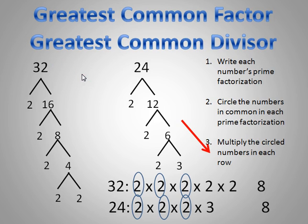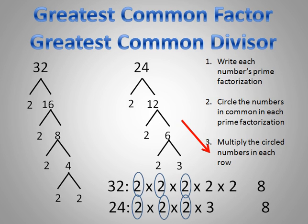That's how you find the GCF or GCD — remember, they are the same thing. Write out the prime factorization, match them up, circle the numbers that match, and multiply the circled numbers. If you're having trouble writing a prime factorization using a factor tree, check out my other video called 'Factoring Numbers Using a Factor Tree' — the link is in the video description. Hope that helps!